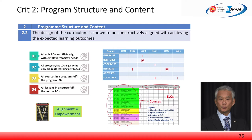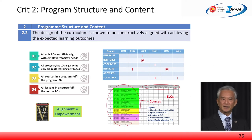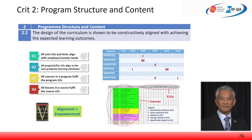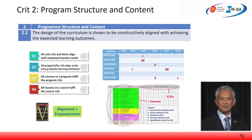Next is Requirement 2.2. The programme needs to show that all elements of its curriculum are aligned to achieving the expected learning outcomes — every lecture and every course, every requirement from the programme, from the faculty, and from the university, aligned vertically and horizontally. Everything that is taught and experienced at a university needs to be aligned to the expected learning outcomes. Also under Requirement 2.2 is the need to show the courses to ELO mapping.